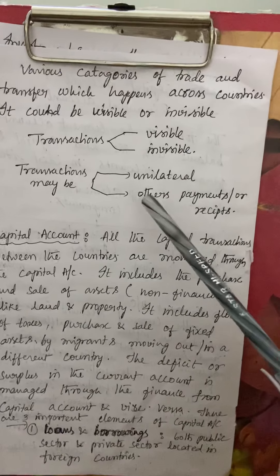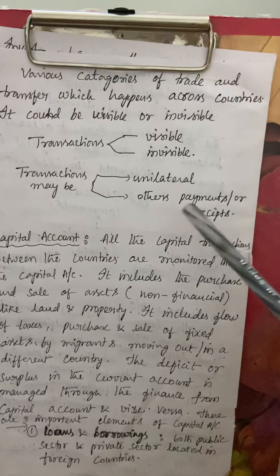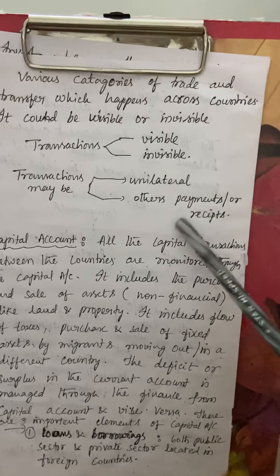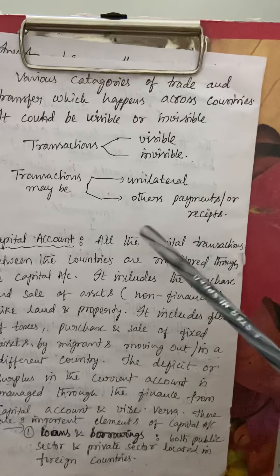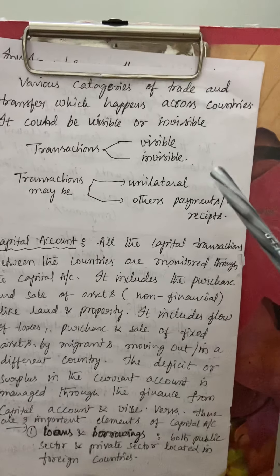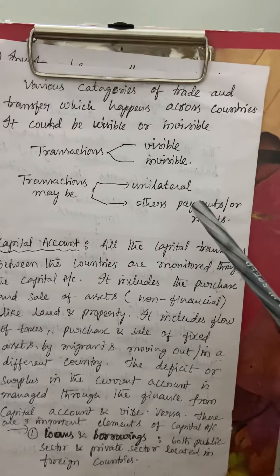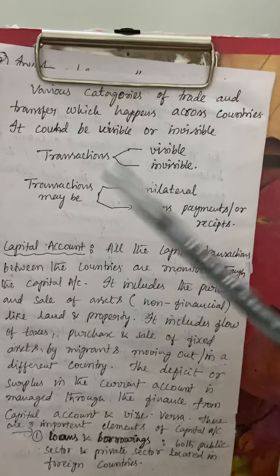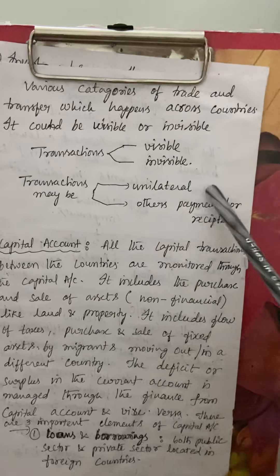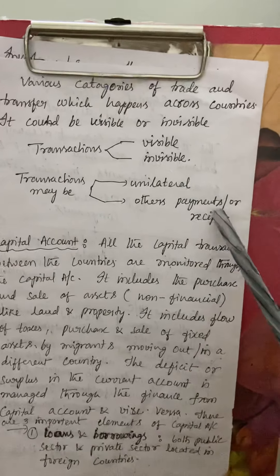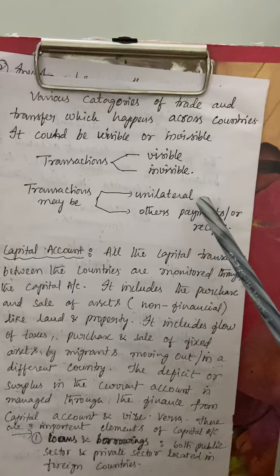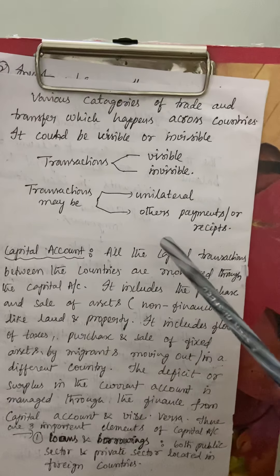Transactions may also be unilateral. For example, if your family or relatives are staying in other countries and you are sending money to them — as a gift or any kind of transfer — that is called unilateral. These transactions are made by individuals.